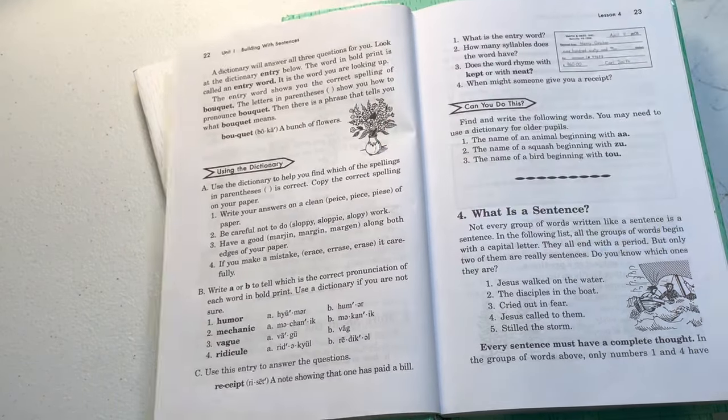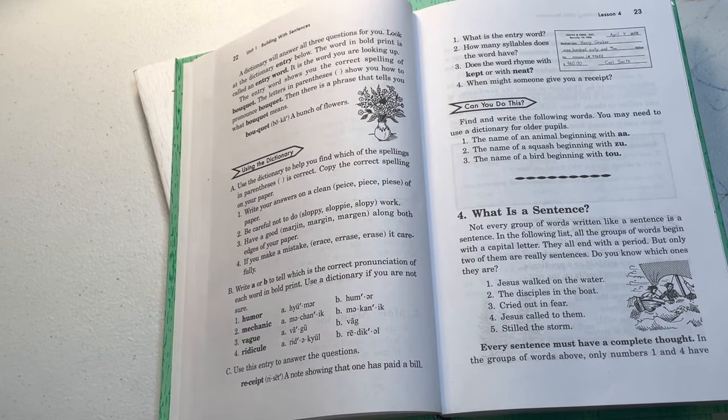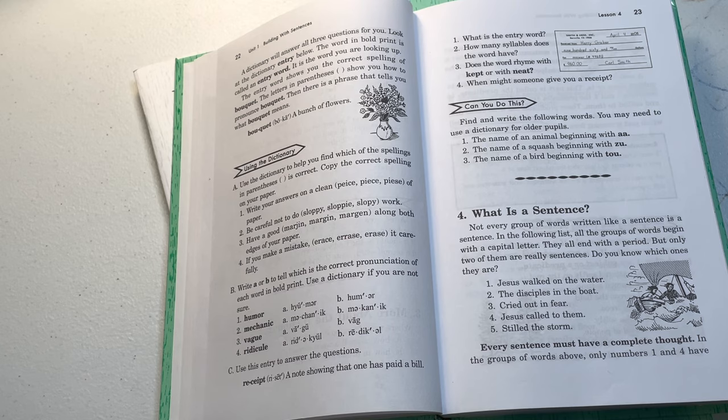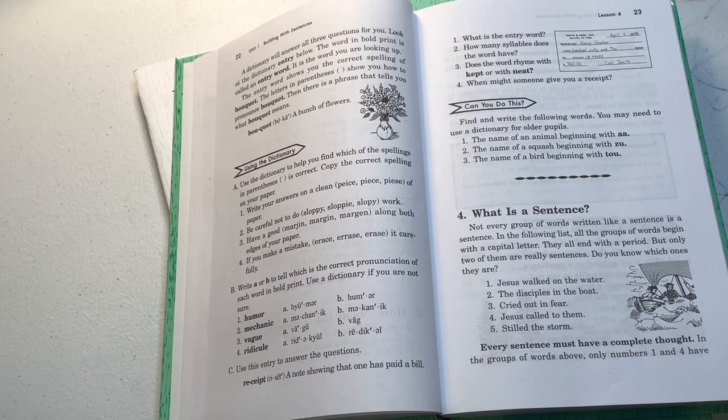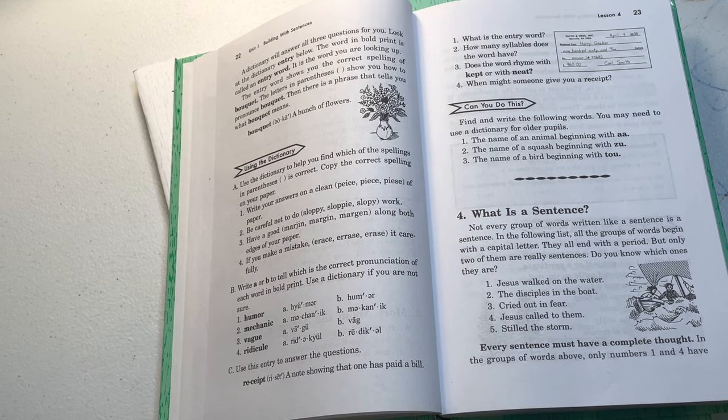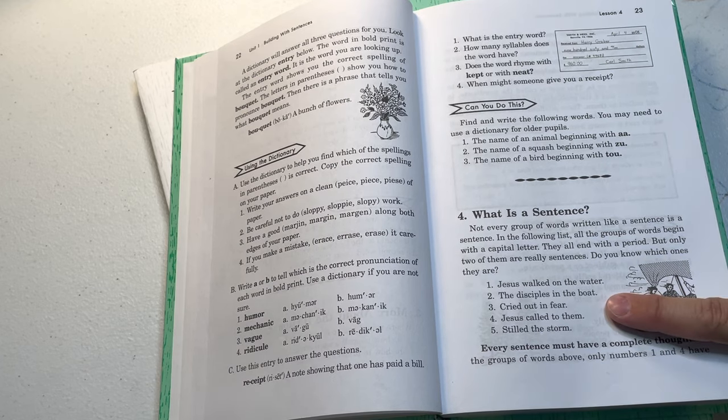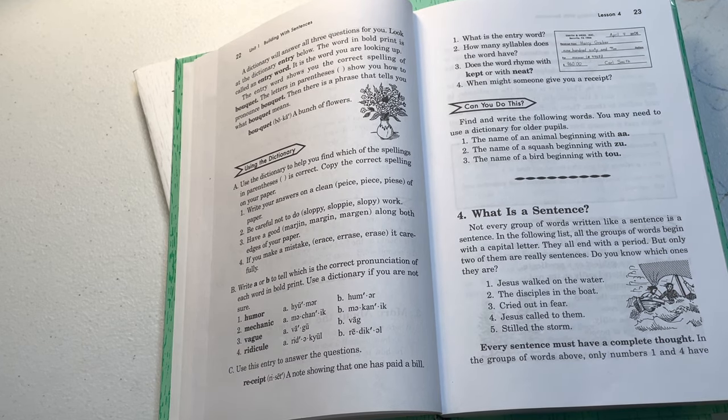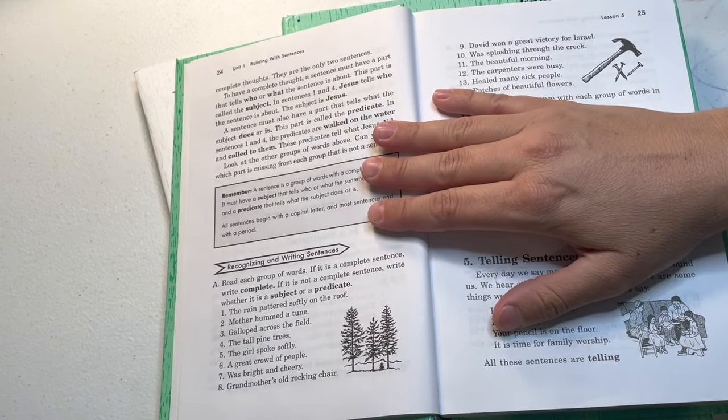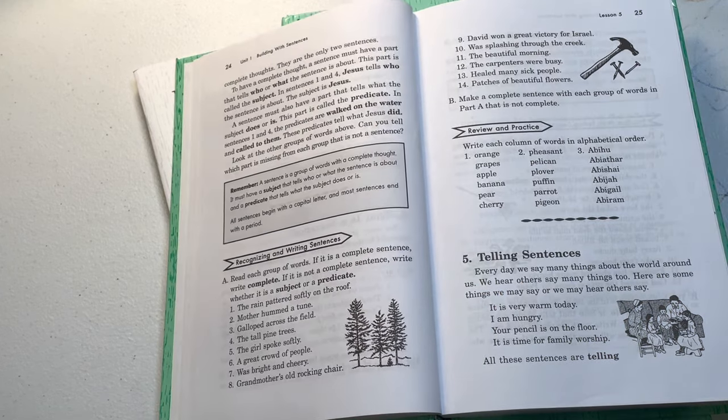I'm just gonna kind of flip through here a little bit. This is about the dictionary, and then what is a sentence? Not every group of words written like a sentence is a sentence. In the following list, all the groups of words begin with a capital letter. They all end with a period, but only two of them are really sentences. Do you know which ones they are? Then they have these five options. Jesus walked on the water. The disciples in the boat cried out in fear. Jesus called to them, stilled the storm. So they're telling a little story, essentially.